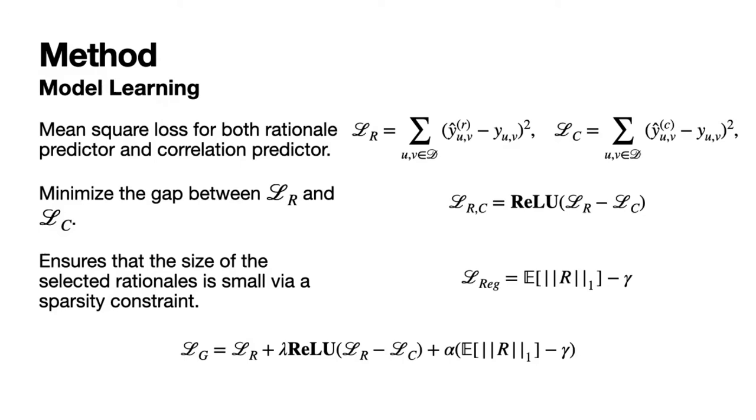Since the Rationale Generator needs to construct a minimal feature set with maximum predictive ability, to satisfy these constraints introduced by d-separation, we add two terms to the optimization objective. The first term is to minimize the gap between LR and LC. The second term ensures that the size of the selected rationales is small via a sparsity constraint. Finally, we design the optimization objective of the Rationale Generator as LG. We apply a loop training strategy for this adversarial learning to optimize LR, LC, and LG.